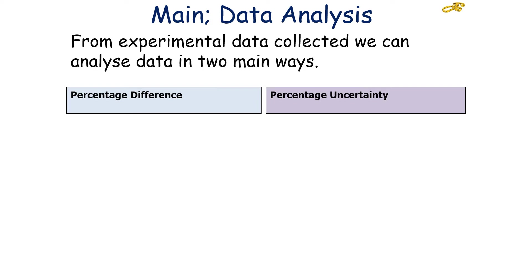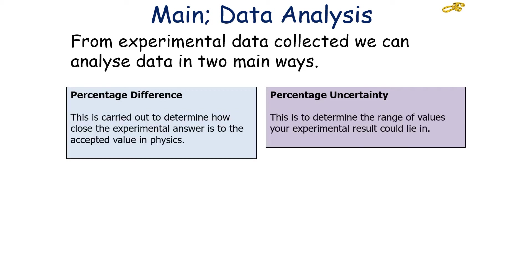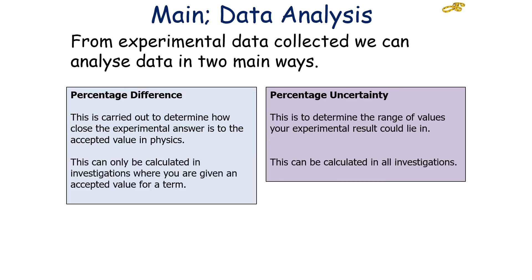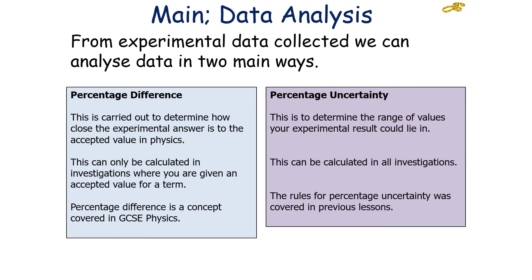We can analyse data to produce two different values: percentage difference and percentage uncertainty. Percentage difference is carried out to determine how close the experimental answer is to the accepted value in physics, whilst percentage uncertainty is used to determine the range of values your experimental result could lie in. Percentage difference can only be calculated in investigations where you are given an accepted value, but percentage uncertainty can be calculated in all investigations. Percentage difference is a concept covered previously at GCSE, whilst the rules for percentage uncertainty were covered in the previous lessons on uncertainties.